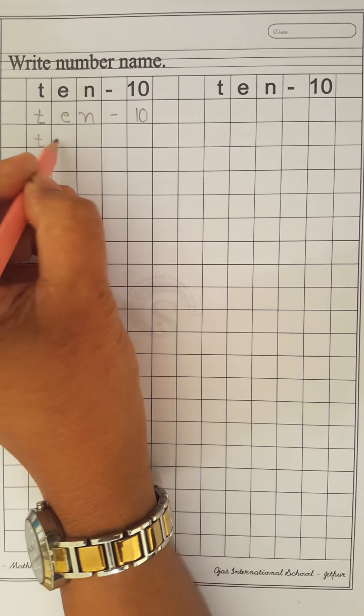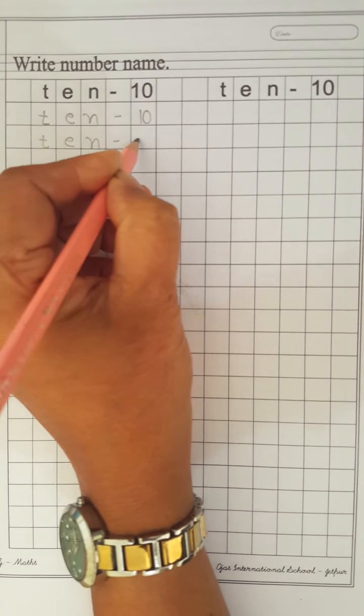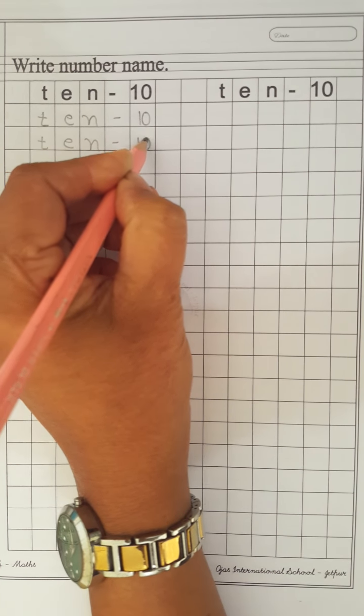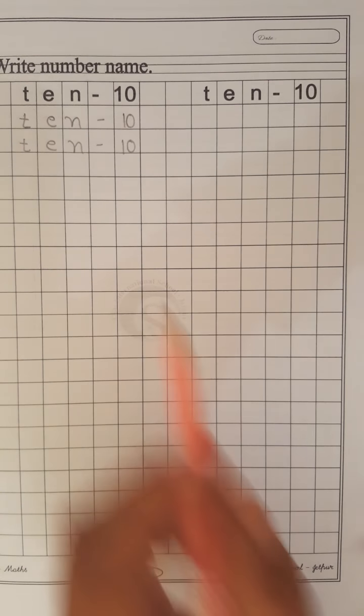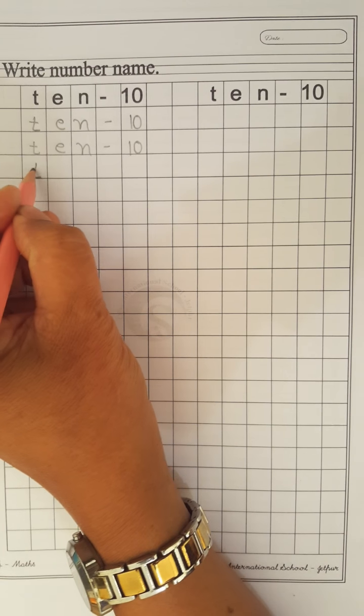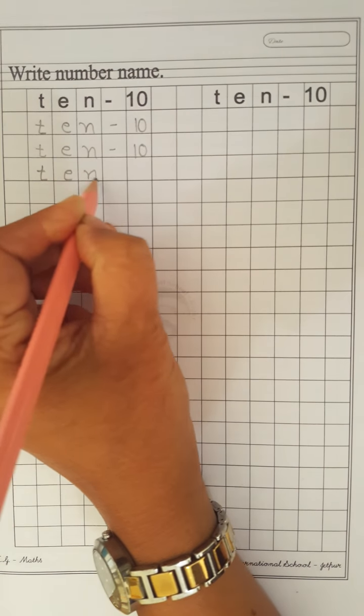Again, T-E-N-10-10. Children, whenever you write number name of 10, your letters should be touched down side line. Okay? Like this way.